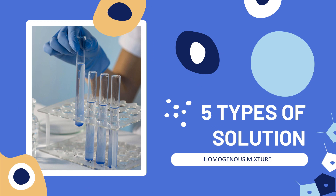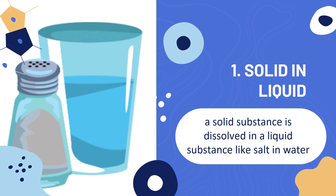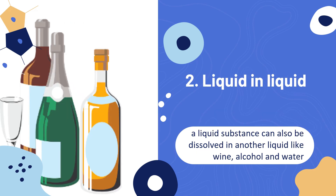Now let's have the five types of solution — all of which are homogeneous mixtures. First is the solid in liquid solution: a solid substance is dissolved in a liquid substance, like a solid dissolved in water. Can you think of an example? Next is the liquid in liquid solution: a liquid substance dissolved in another liquid, like wine — alcohol and water. Can you give me an example of a liquid in liquid solution?